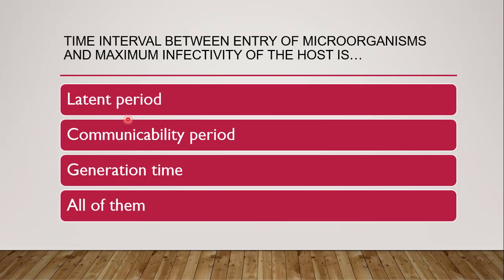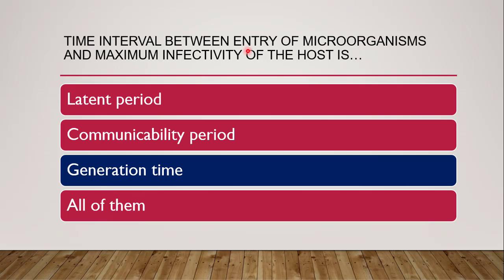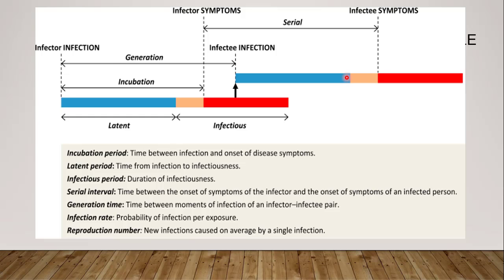Next, question 2: the time interval between the entry of the microorganism and maximum infectivity of the host — when the microorganism enters inside the body and infects the host to the maximum extent. The options are whether it is latent period, communicability period, generation time, or all of them. The correct answer is generation time — from entry to maximum infectivity.